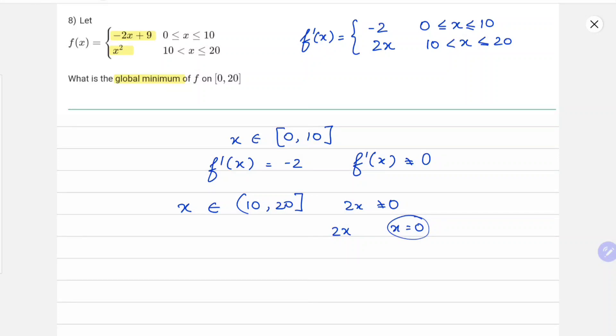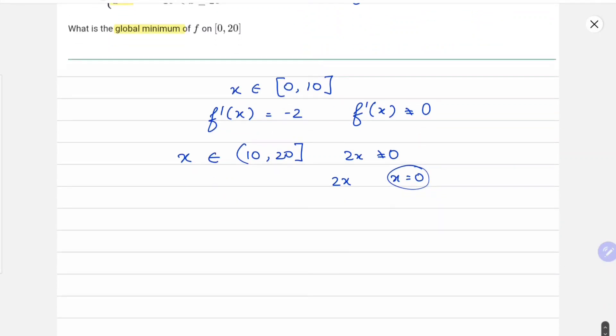So in both cases there is no minima present. You can see that the function is not continuous at x = 10, which leaves us with the endpoints. We have to check all the endpoints: x = 0, x = 10, and x = 20.